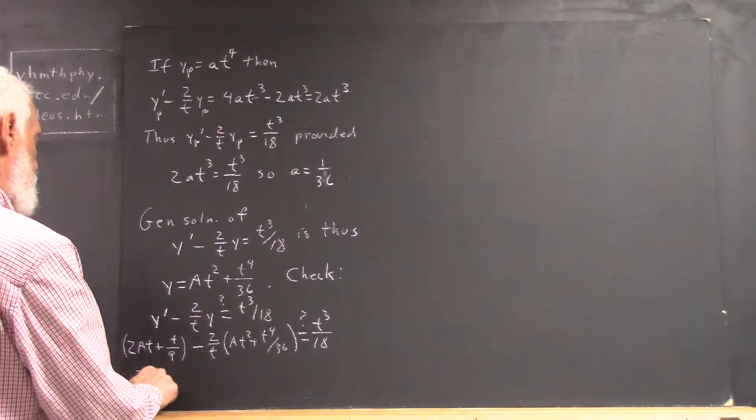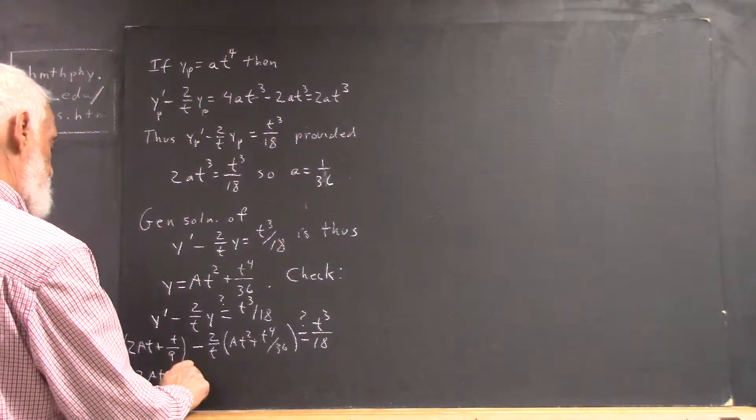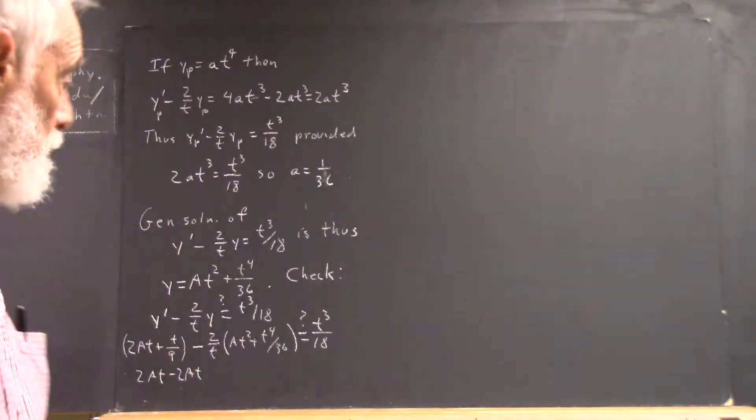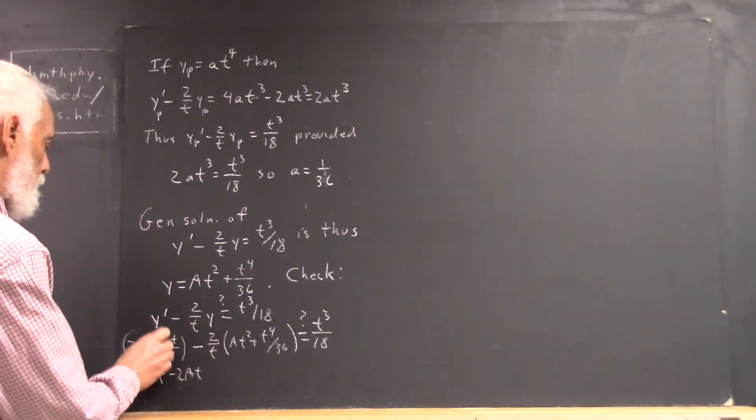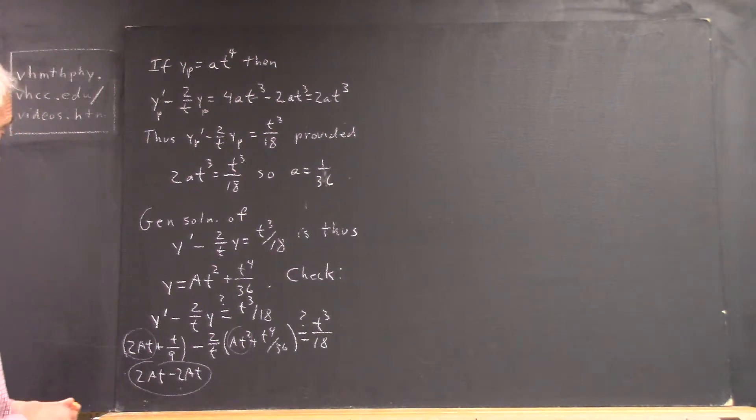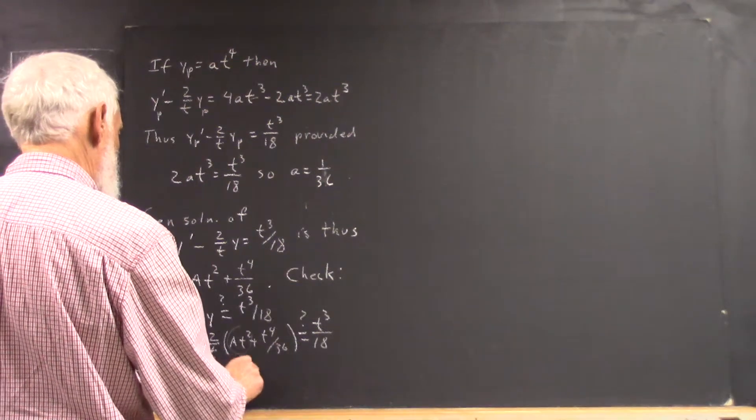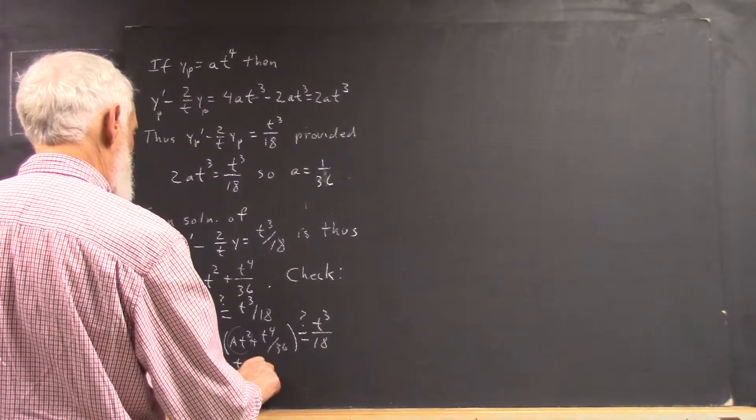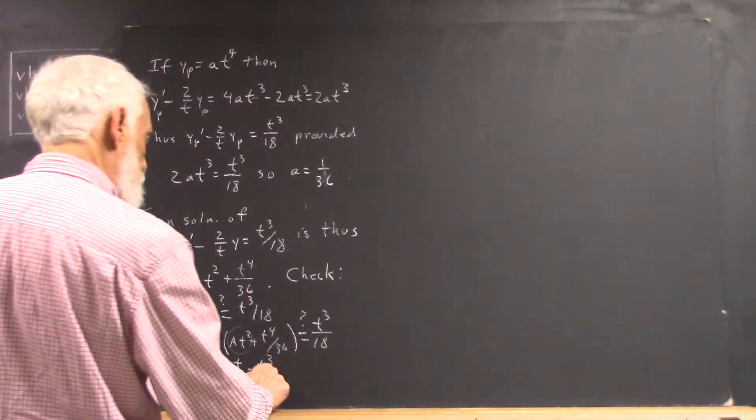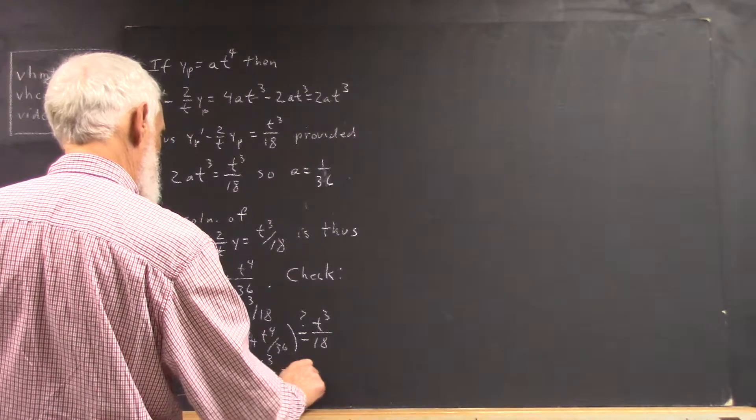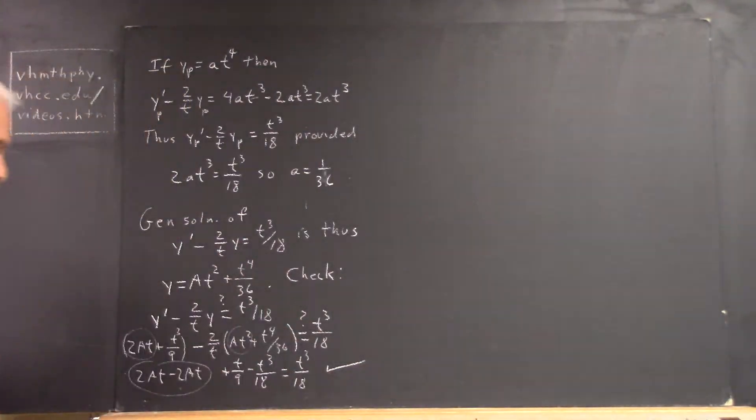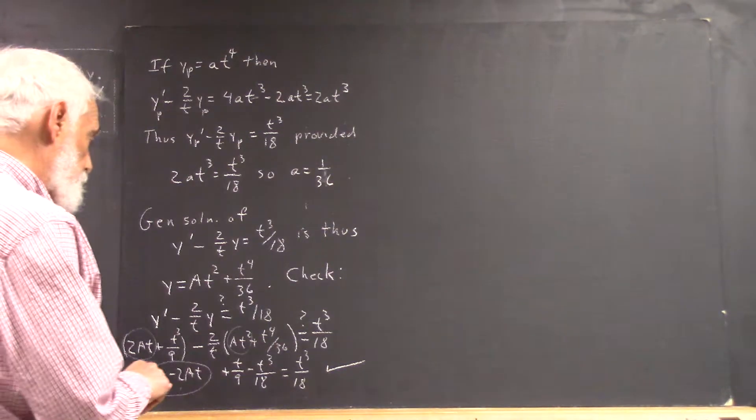But what we see then is this is just 2at minus 2at, and that's from t, and that's from this term and this term. Then it's plus t cubed over 9 minus t cubed, and it's not t over 9, it's t cubed over 9, t cubed over 18.